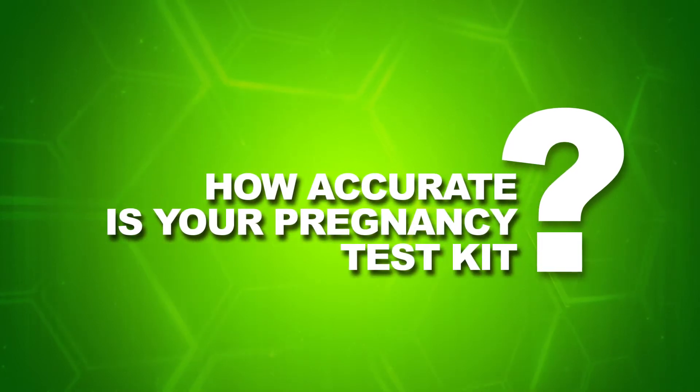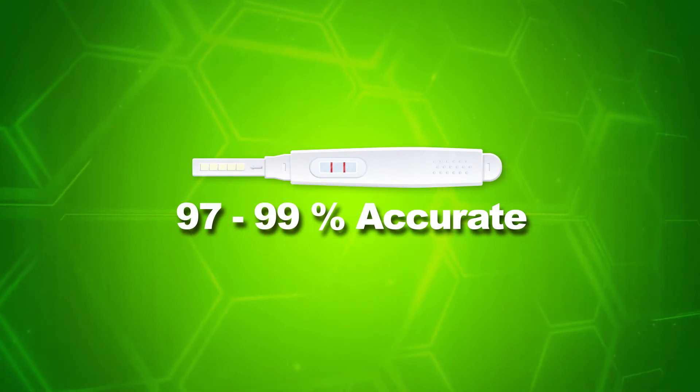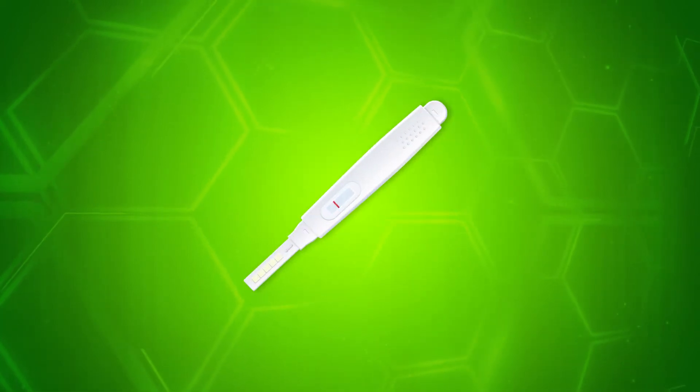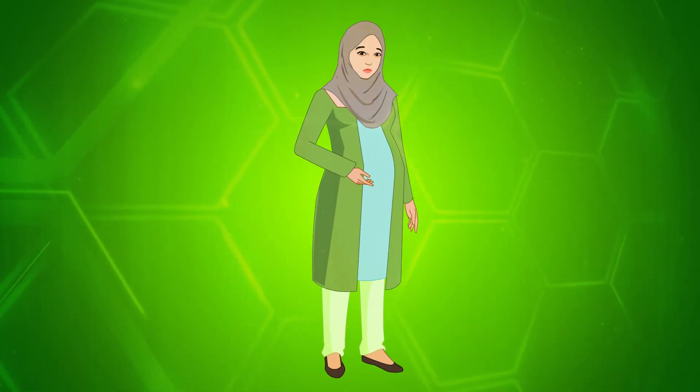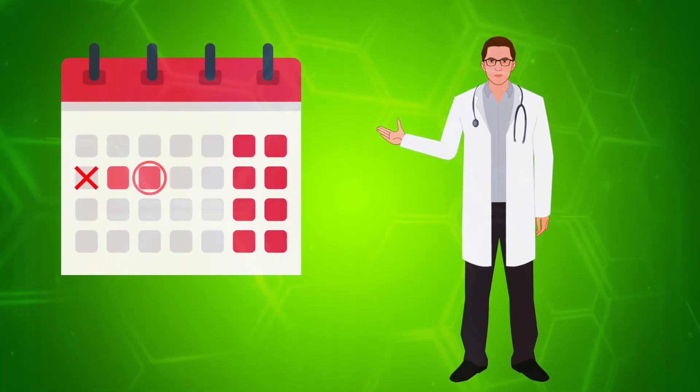You might be wondering how accurate is your pregnancy test kit. The test would normally be 97 to 99% accurate. If your result comes out negative, it might be either you are not pregnant, or you are taking the test too early and might need to try again in a couple of days.